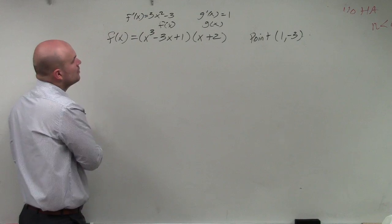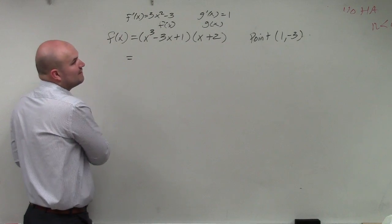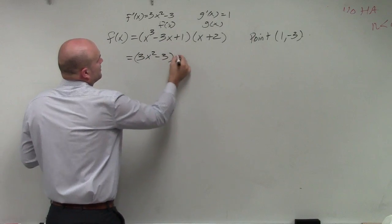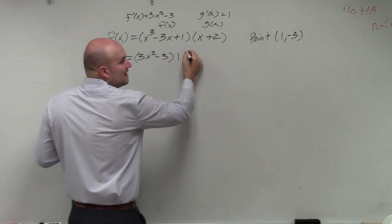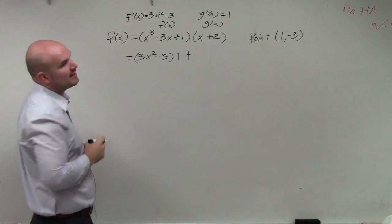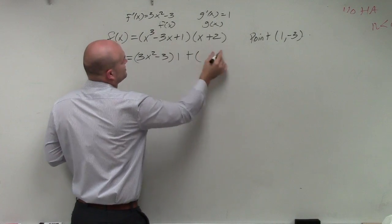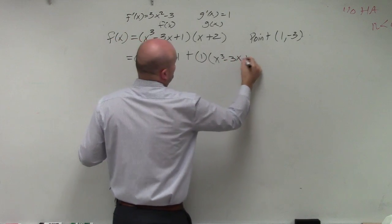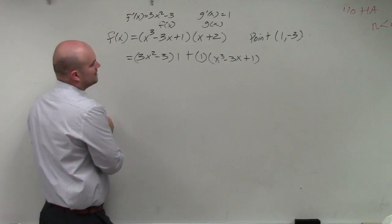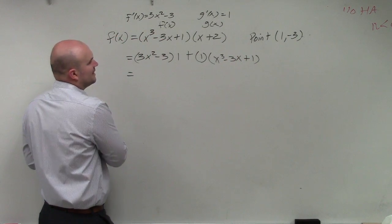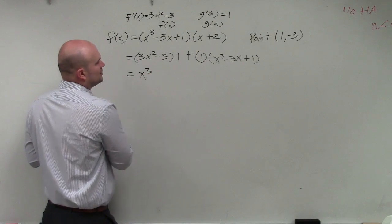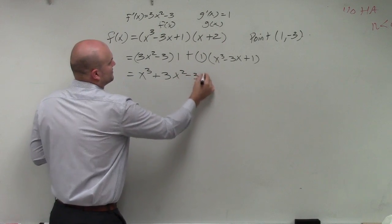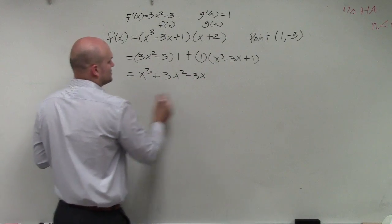Then go ahead and applying the product rule. I'm just going to take f prime of x times g of x, so that's 3x squared minus 3 times 1, and then add that to g prime of x times f of x, which is 1 times x cubed minus 3x plus 1. And therefore, now we can go ahead and combine like terms, and that gives me x cubed plus 3x squared minus 3x plus 1.